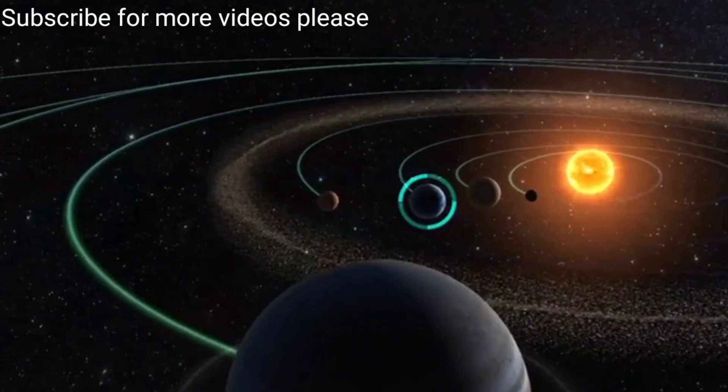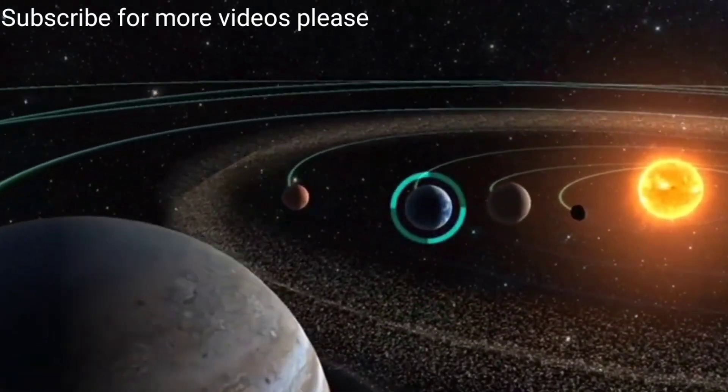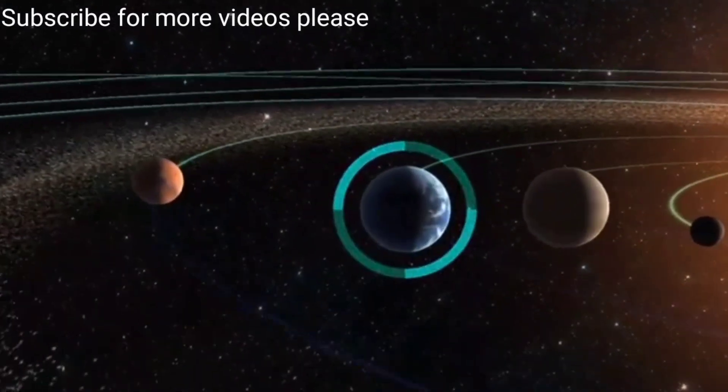According to our current understanding, the Earth formed 4.57 billion years ago, and life appeared on its surface within a billion years.